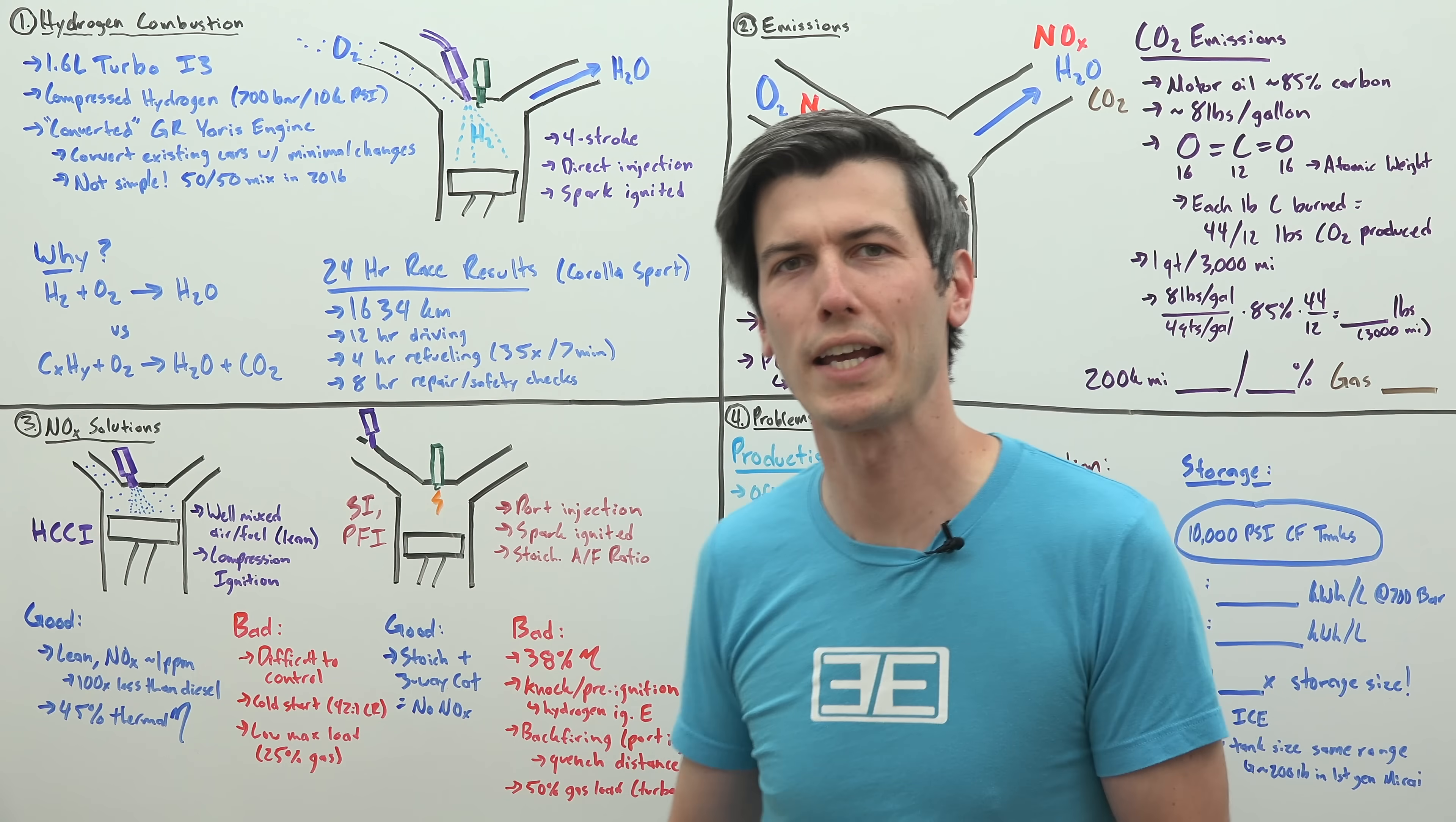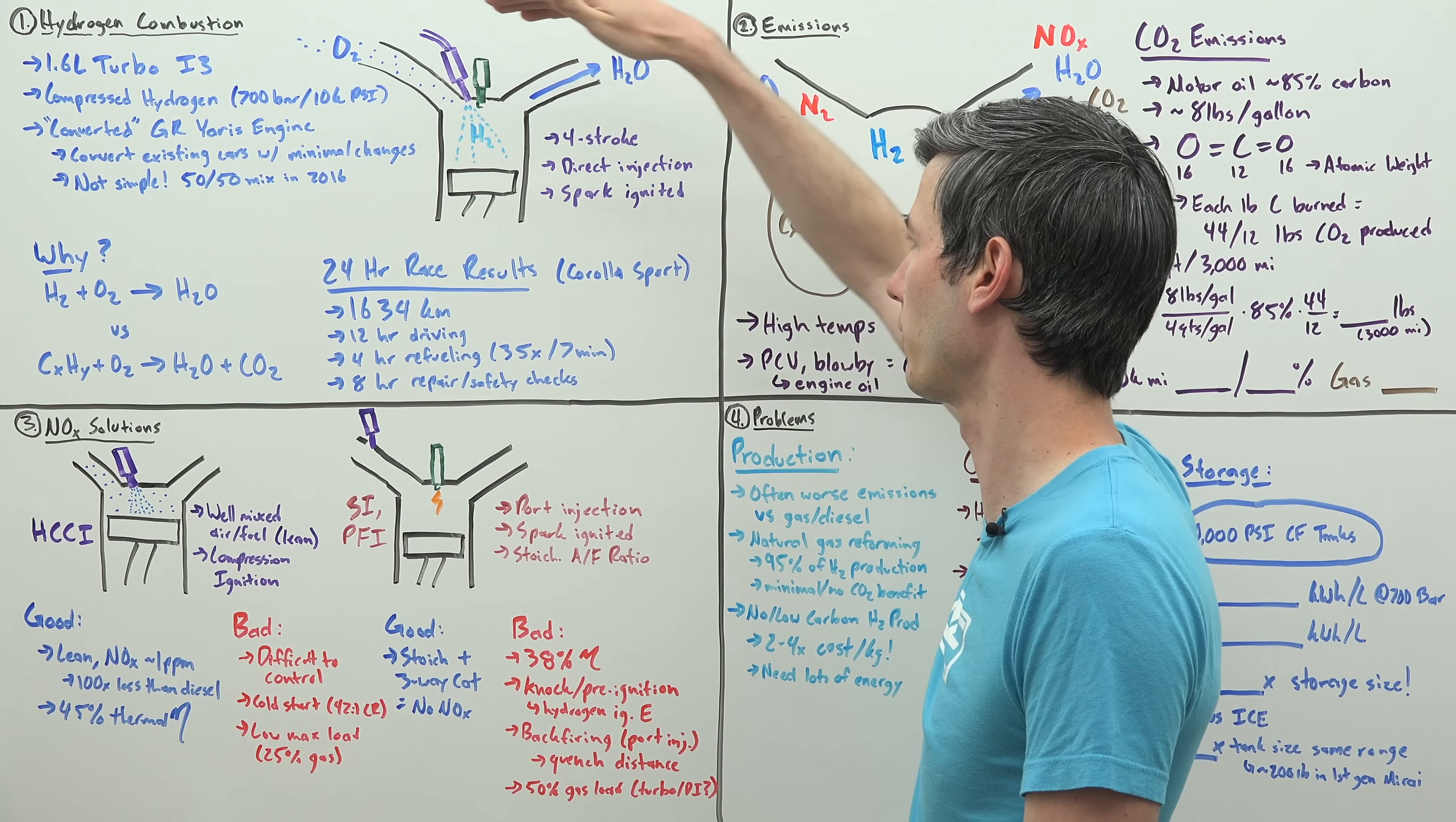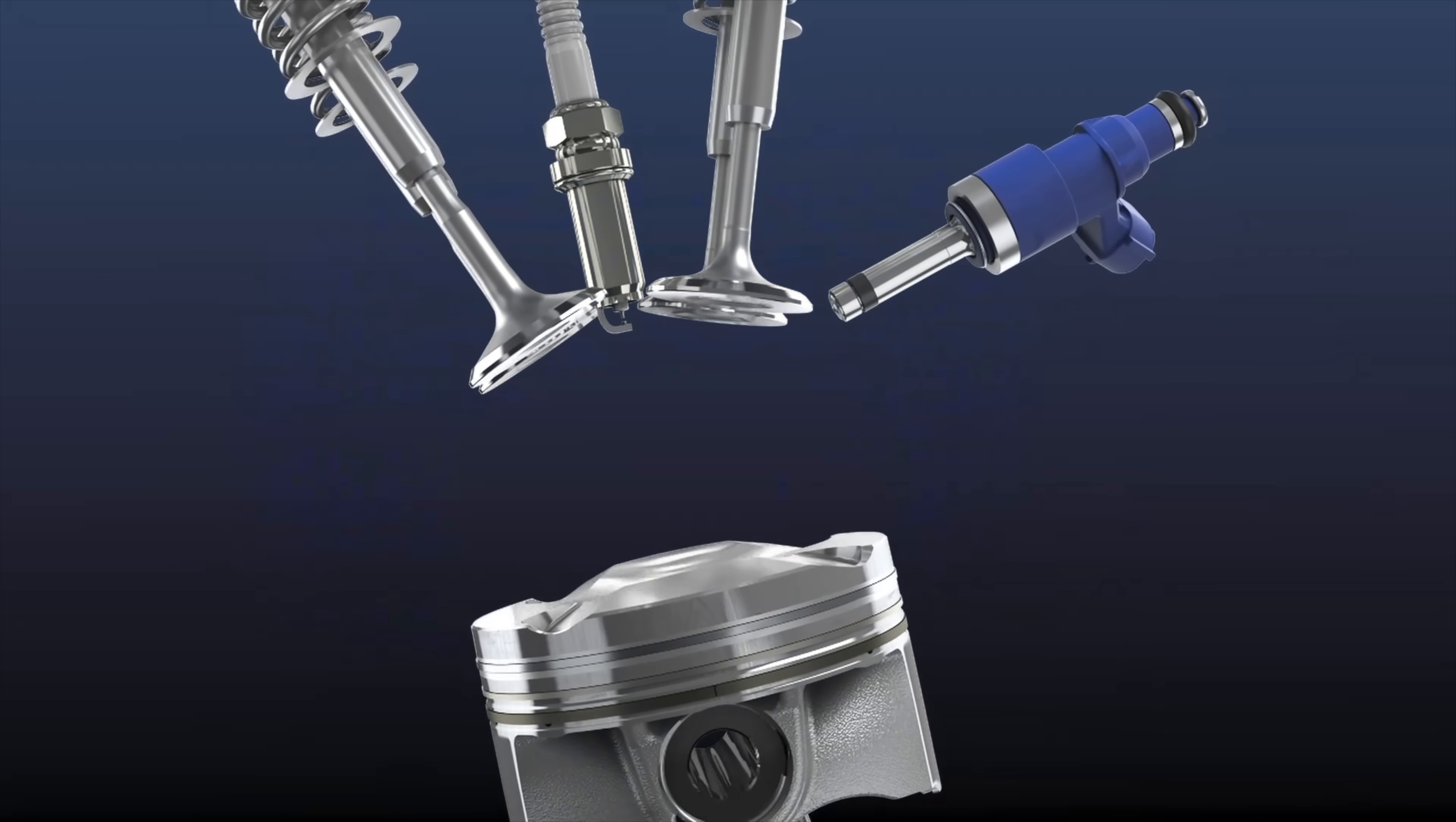This engine operates much like a typical gasoline engine. It has four strokes: intake, compression, power, exhaust. It has direct injection for the hydrogen fuel and it is spark ignited. So in comes oxygen, you spray in hydrogen, and then your emissions are water.